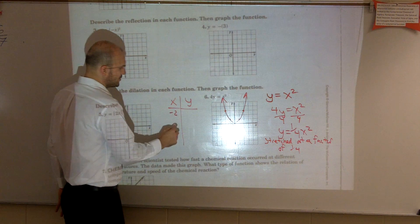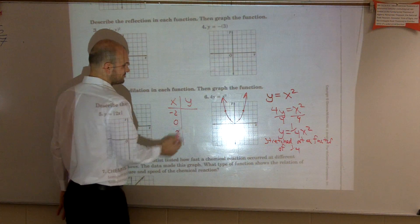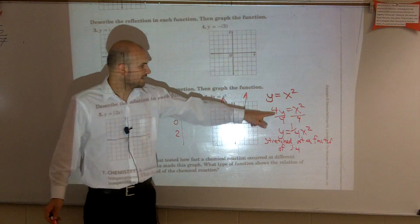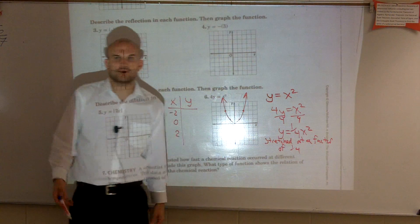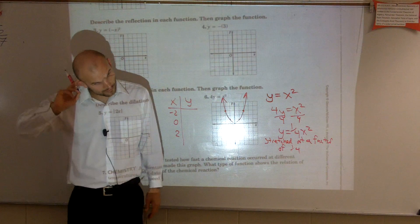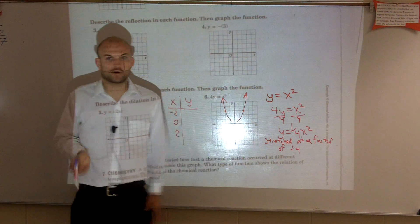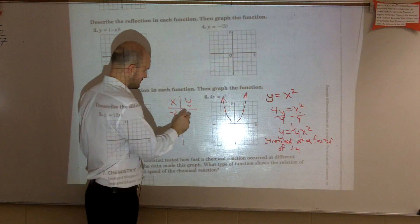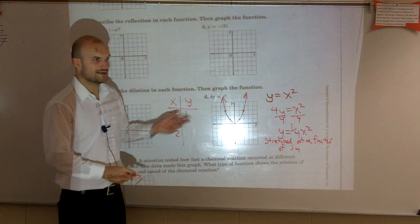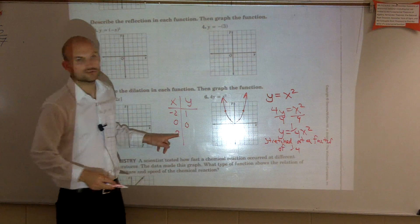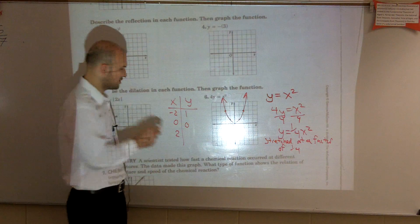Let's do negative 2, 0, and 2. So now let's plug it in. Negative 2 squared is 4, positive 4, times 1/4th is 1. 0 squared is 0, times 1/4th is 0. 2 squared is 4, times 1/4th is 1.